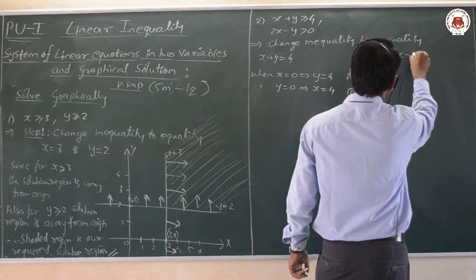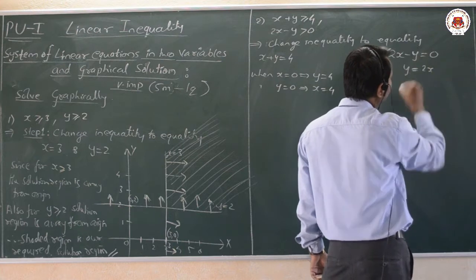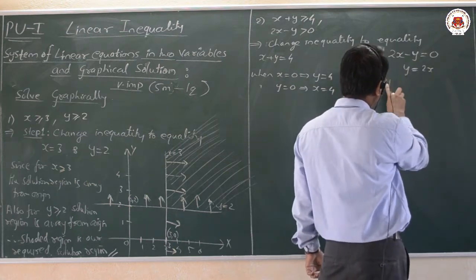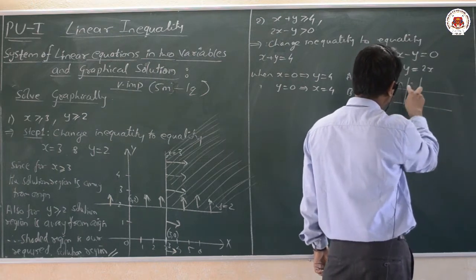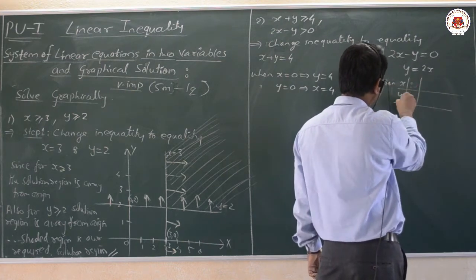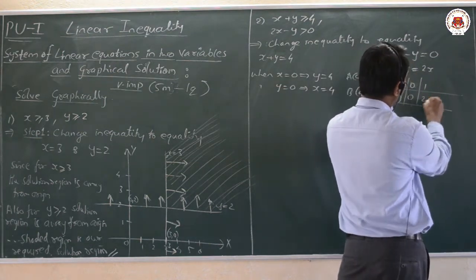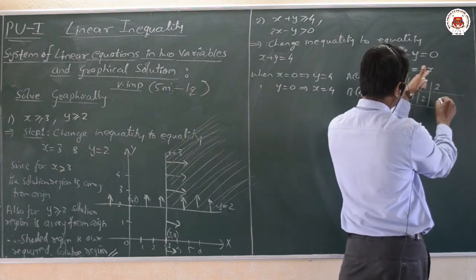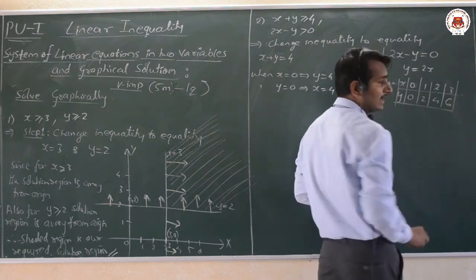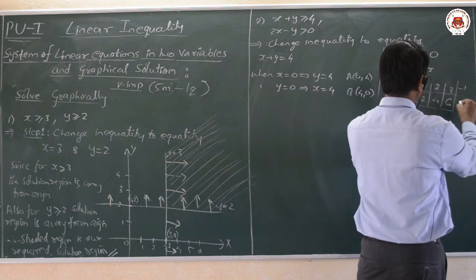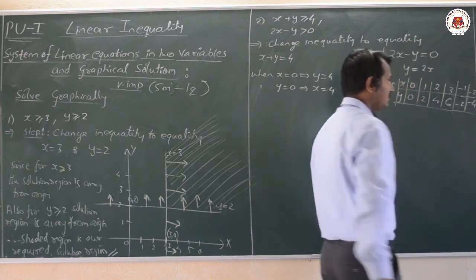The second line is 2x - y = 0, which can be written as y = 2x. This passes through the origin. Table of values: when x = 0, y = 0; x = 1, y = 2; x = 2, y = 4; x = 3, y = 6. For negative values: x = -1, y = -2; x = -2, y = -4.